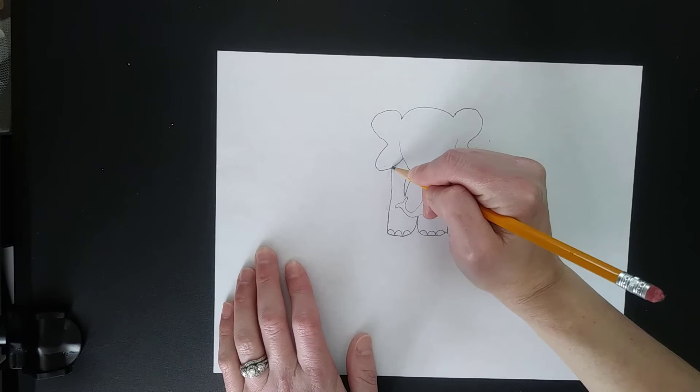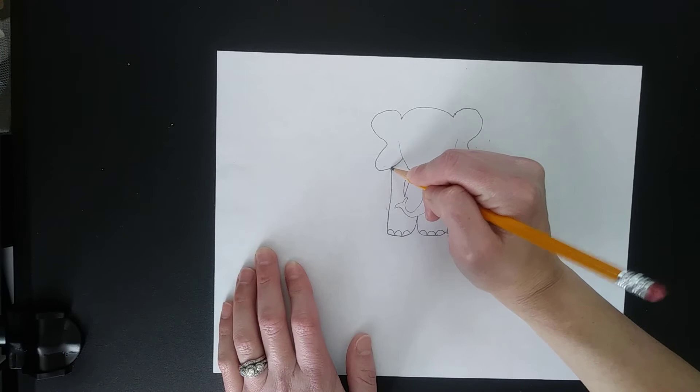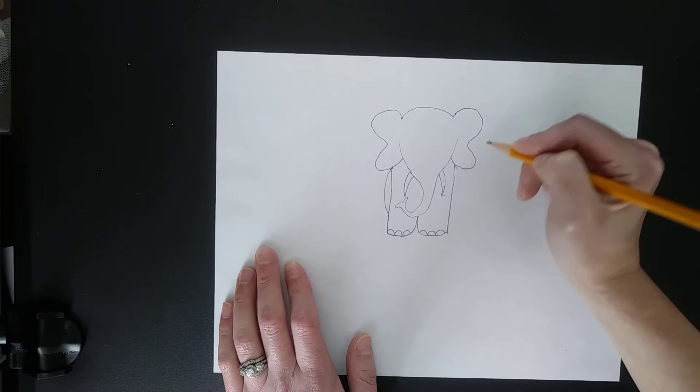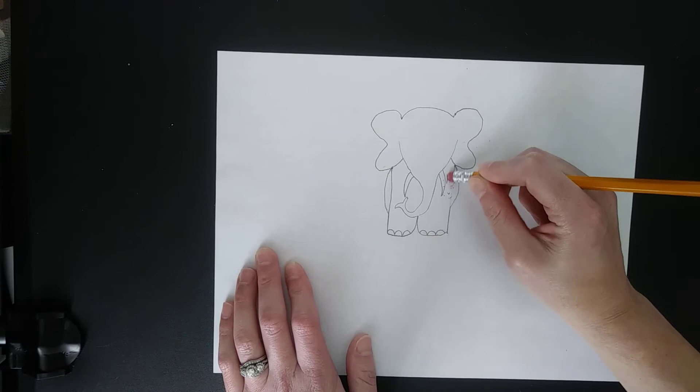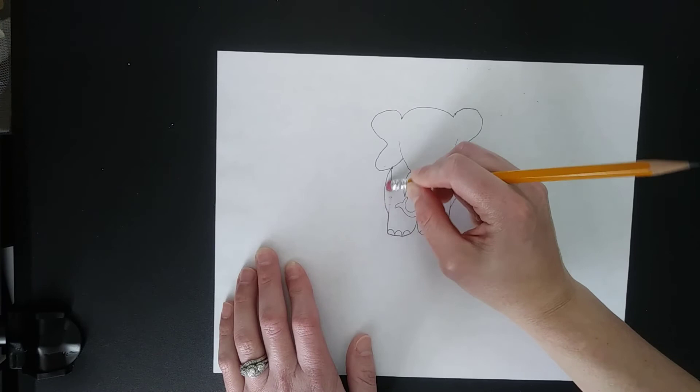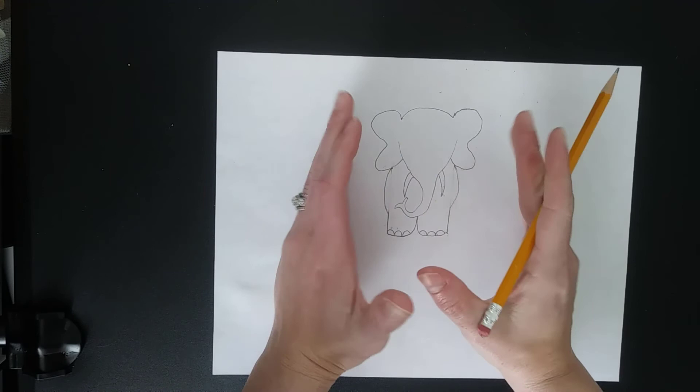So under my ear flap, at the top where my 11 connects under my ear, I'm going to curve out on each side. And from there, I'm going to erase these two parallel lines just inside where I've made that curve. And the idea is to make your elephant look a little bit rounder and a little bit less perfectly straight.